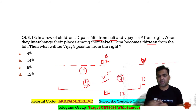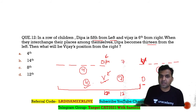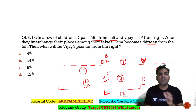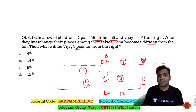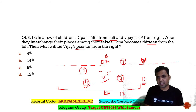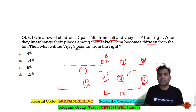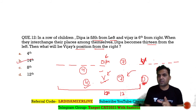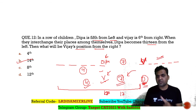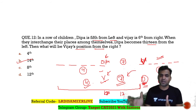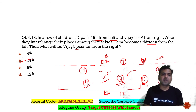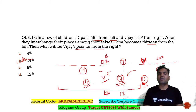There are 7 people between Dipa and Vijay — this was true before and after the interchange. To find Vijay's position from the right after the swap: on the right of Dipa's new position there are 5 people, plus Dipa (1), plus 7 people between them = 13 people to the right of Vijay. So Vijay's rank from the right is 13 + 1 = 14th. Option B is the correct answer. These ranking-based questions are very relevant for exams like CMAT.